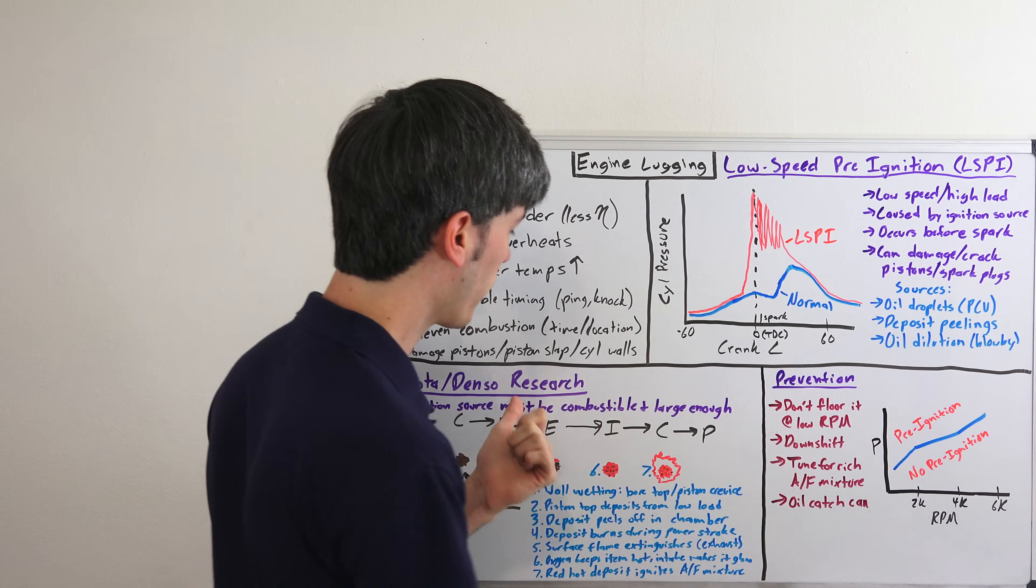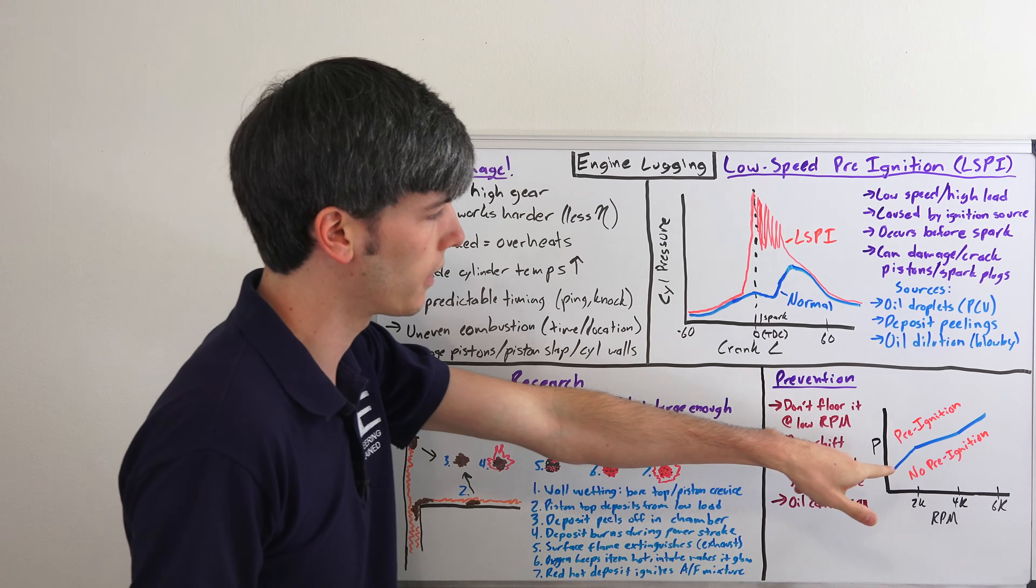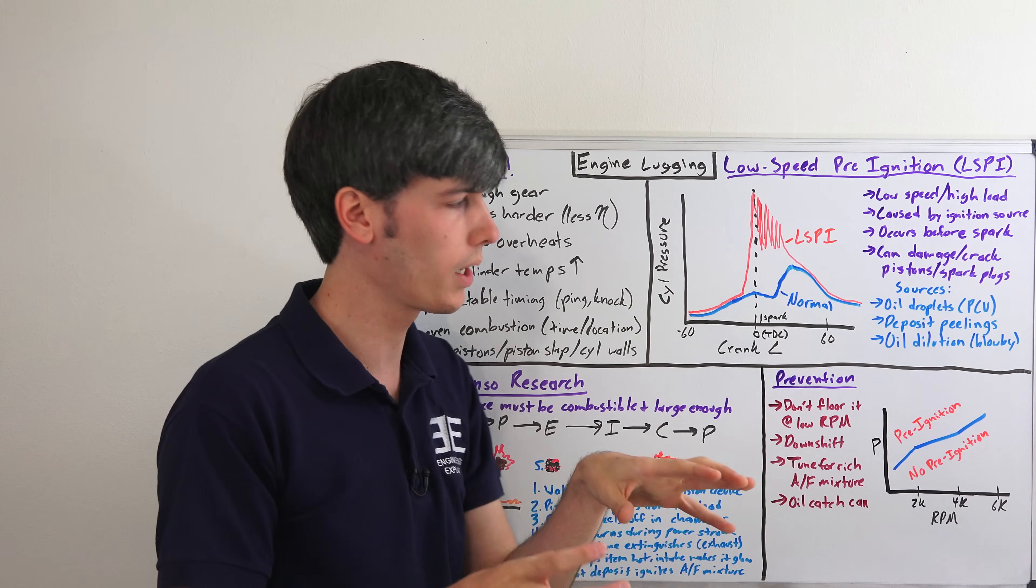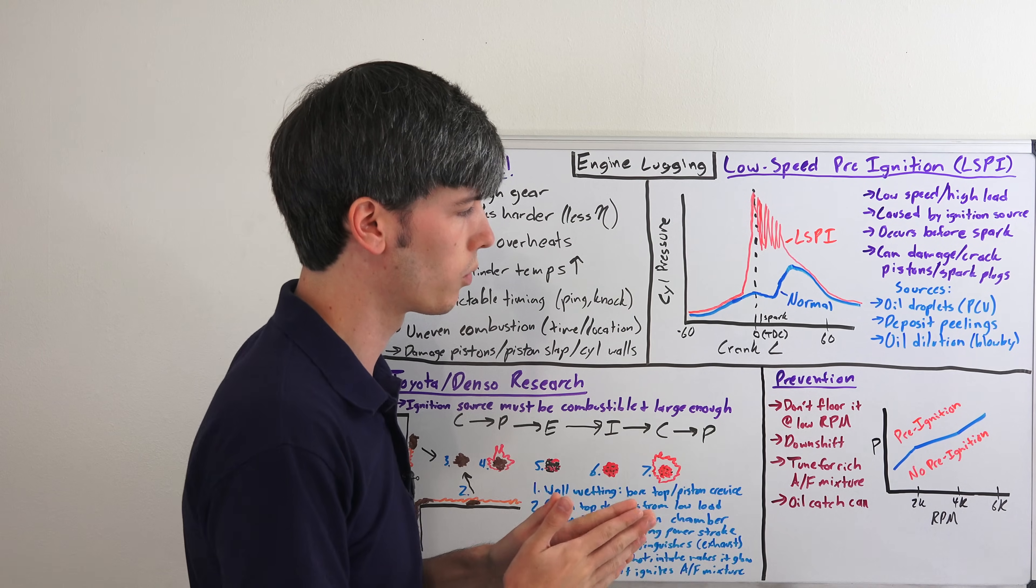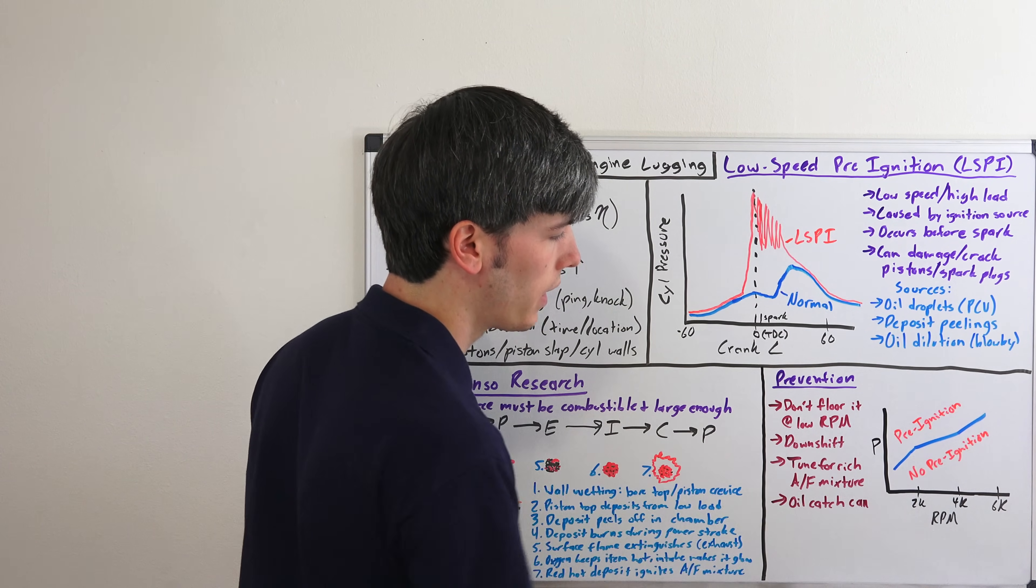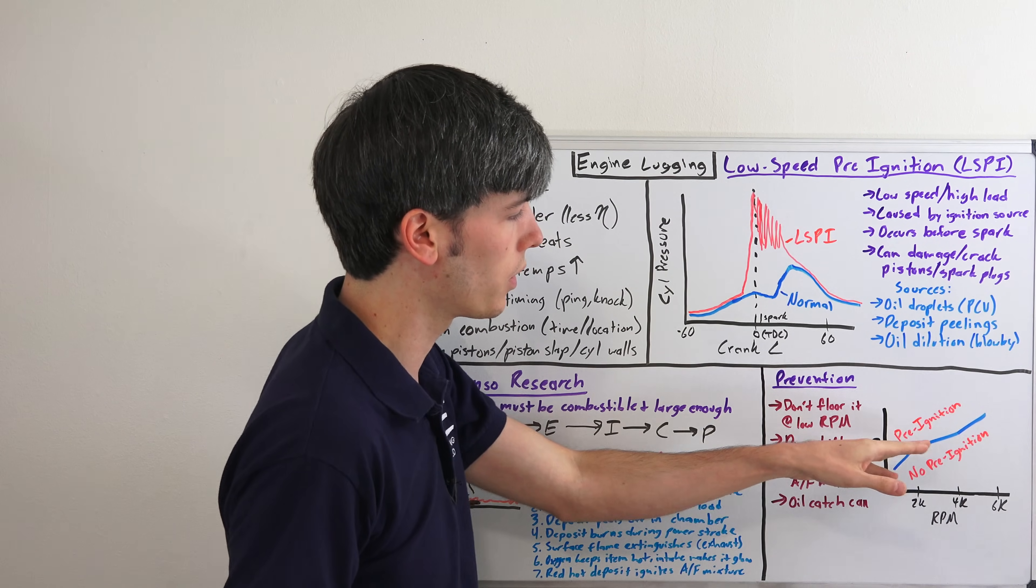Point is you can downshift and it's very easy to prevent this. In this Toyota and Denso study that they did, they were introducing deposits into a chamber and seeing when pre-ignition would occur. What they plotted was the cylinder pressure versus the RPM,